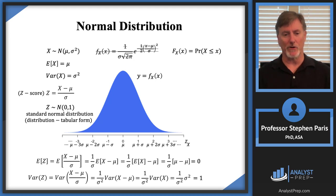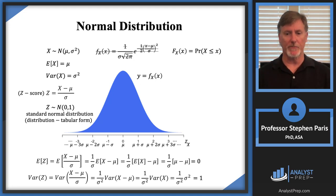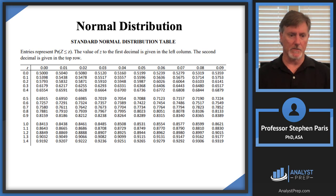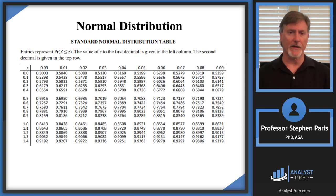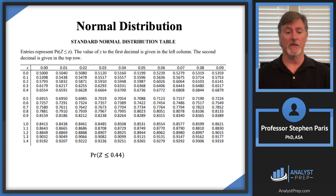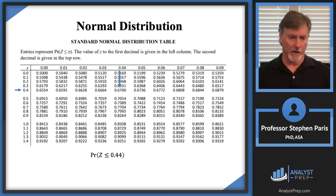The distribution function for the standard normal distribution is given in tabular form — there's no closed-form formula, so you look things up in a table. On the P exam, the table will look like this. The entries represent the probability that the random variable is less than or equal to some z-score. For instance, if we're looking for the probability that Z ≤ 0.44, we find 0.44 in the table.